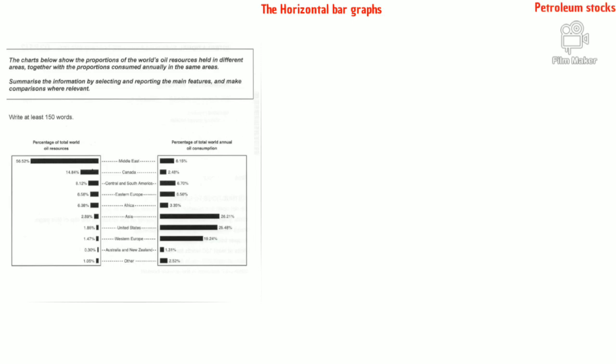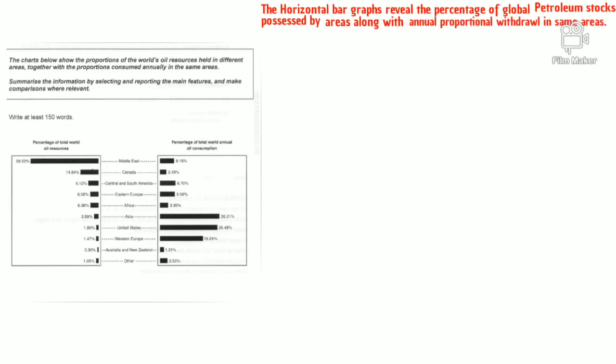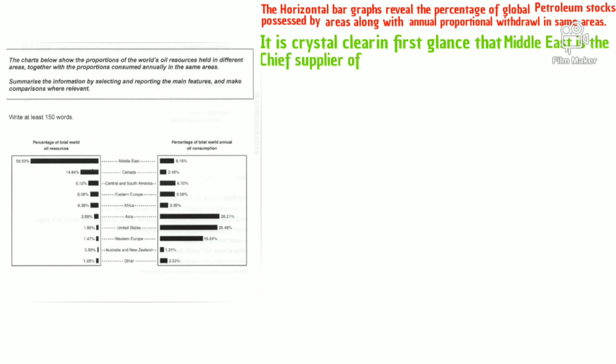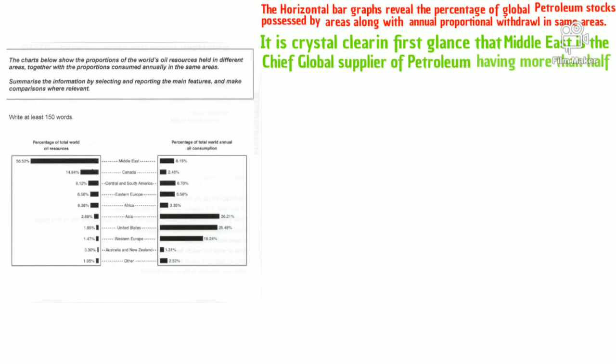Now let us write the introduction. The horizontal bar graphs reveal the percentage of global petroleum stocks possessed by different areas, along with their proportional annual withdrawals in the same areas. This is written in present indefinite. It is crystal clear at first glance that the Middle East is the chief global supplier of petroleum, having more than half of the total world stocks.